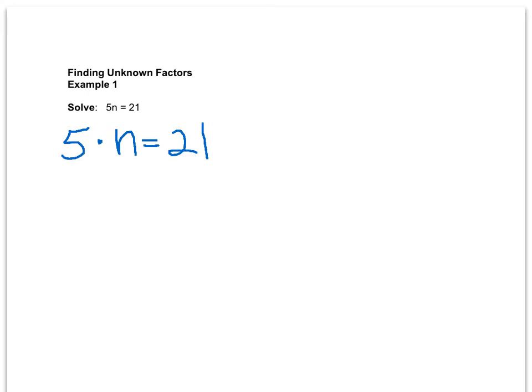So we can find this unknown factor n by dividing the product 21 by the known factor 5. Let's rewrite this problem then as a division problem, and the reason we can do this is because division is the inverse or opposite operation of multiplication.